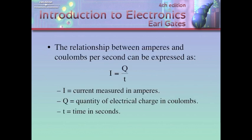The relationship between ampere and coulombs per second can be expressed as I, current, is equal to Q, which is quantity of electrical charge in coulombs, over T, time measured in seconds. So I is equal to Q over T. That's the formula.